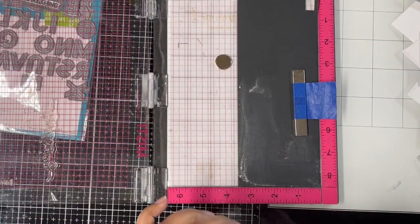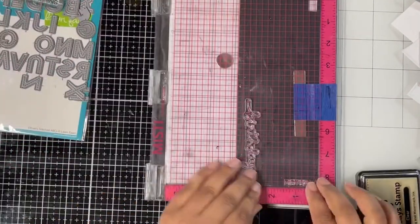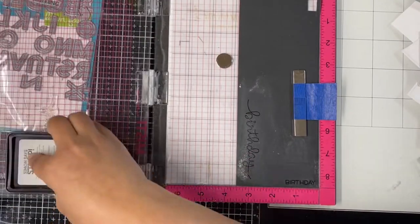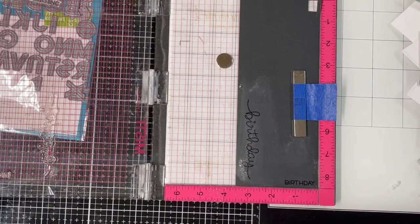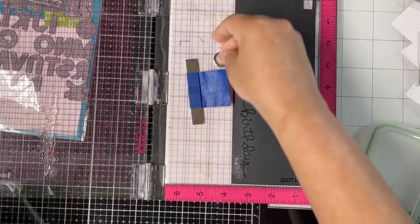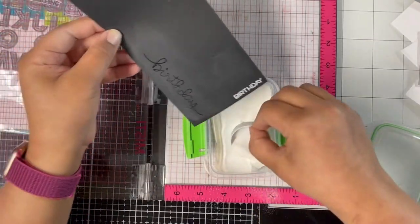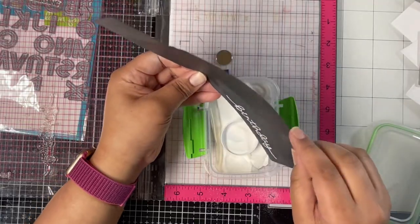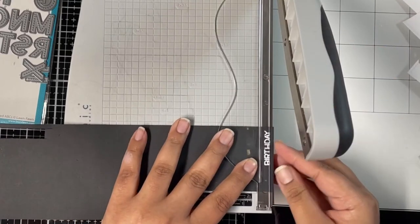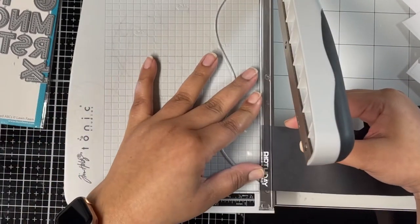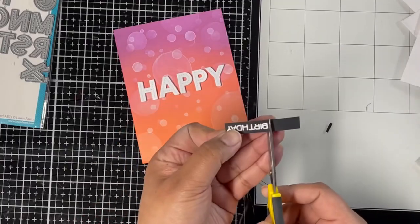Once done gluing, I'll stamp the birthday sentiments for both cards. I'm white heat embossing both sentiments on black cardstock. I've prepped my surface with an anti-static powder tool, then stamping these birthday sentiments with Simon Says Stamp clear ink. Now I'll pour white embossing powder on both sentiments and heat set them. The scripty birthday sentiment is from the Big Scripty stamp set from Lawn Fawn, and the other is from the Happy Happy Happy stamp set. I'm trimming off the birthday sentiment and adding double-sided foam tape behind it.